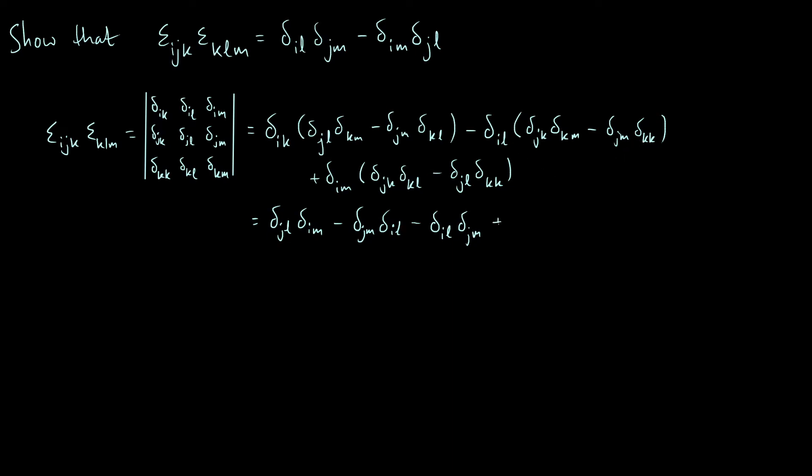The next term is kind of interesting. So we get a plus from these two minuses, and we've got delta_il delta_jm, but then we've got this delta_kk thing. Now, how can we simplify that? I think the clearest way to see that is just write out what this really means. Remember, we're summing over k, so what this really is is delta_1,1 plus delta_2,2 plus delta_3,3. Now, these are all just 1, because the Kronecker delta is defined so that if the two indices are the same, then it's just 1. So we get 1 plus 1 plus 1, which is 3. And so we can just actually put a 3 in front of this factor there.